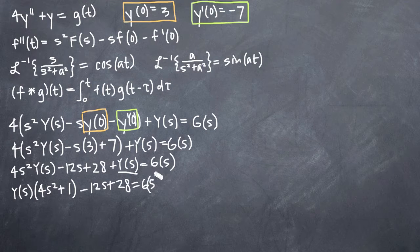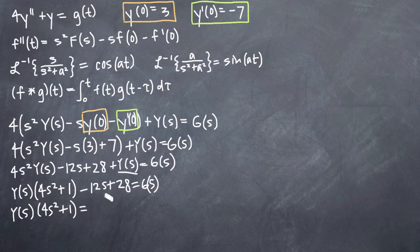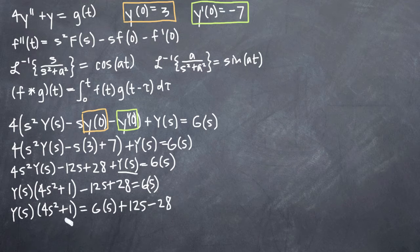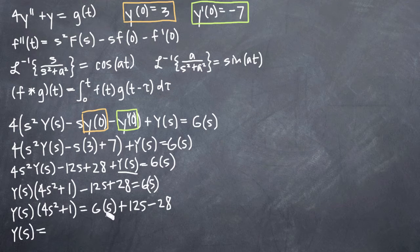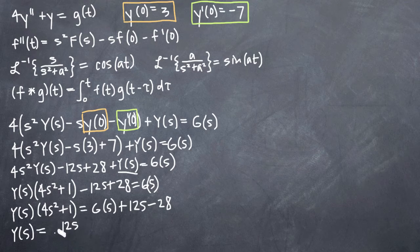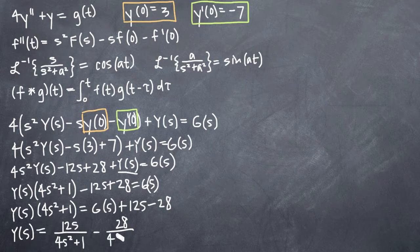Now we need to move everything over to the right-hand side except capital Y(s), giving us G(s) plus 12s minus 28, and then divide both sides by 4s² plus 1 to solve for Y(s). So we get Y(s) equal to 12s over (4s² plus 1) minus 28 over (4s² plus 1) plus G(s) over (4s² plus 1), breaking up the fractions to prepare for the inverse Laplace transform.